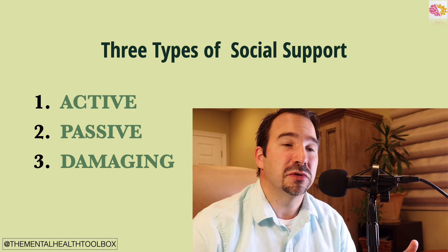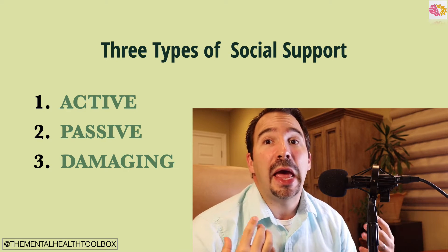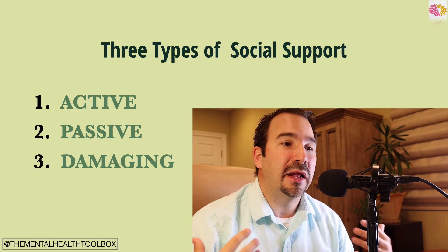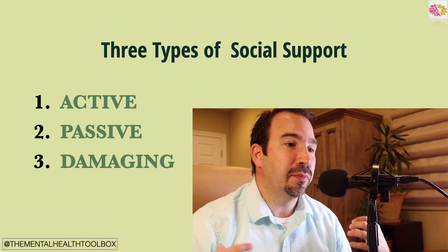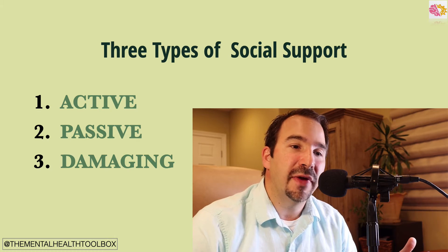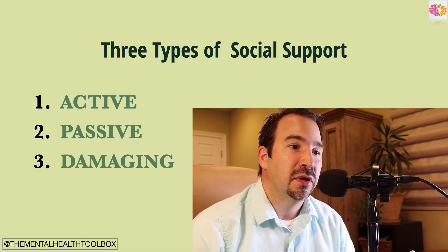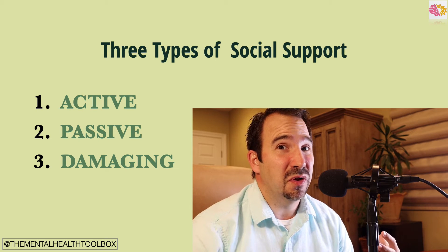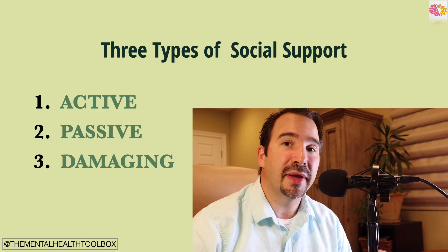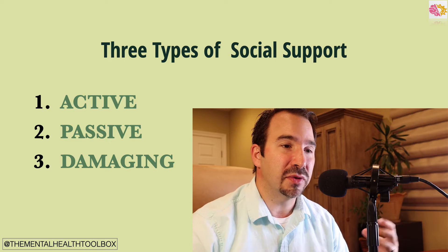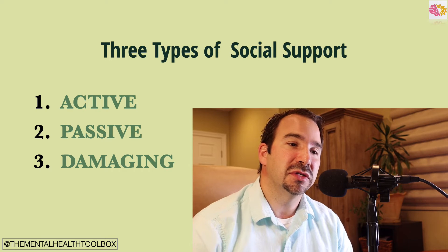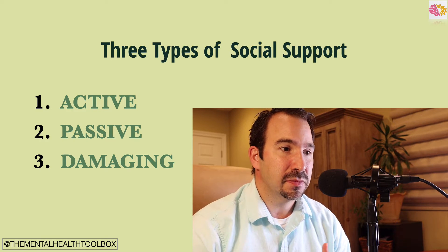I want you to consider three types of social support. While there are many categories, there are in general three main types. The first is active supports. Active supports consist of the types of people, environments, and groups that act as a force propelling us toward our stated goals and ambitions. They hold us accountable to our values and keep us just outside our comfort zone — really in our growth zone. James Clear talks about this in Atomic Habits: we have to be uncomfortable to grow, and active supports push us in that direction.